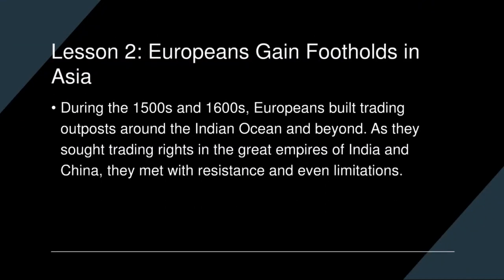Lesson 2: Europeans Gained Footholds in Asia. In the 1500s, Portugal built a vast trade network in the Indian Ocean but soon faced competition from Spanish, Dutch, and English traders. Europeans sought to trade with India and China, but the powerful rulers of these empires set the terms of trade. The Dutch successfully challenged Portugal's dominance in the spice trade, building their own trade networks across Asia. European traders also wanted trading rights in India, China, Korea, and Japan, and the rulers of these lands had different responses to the arrival of Western merchants.